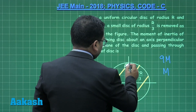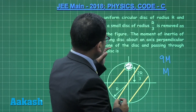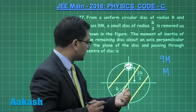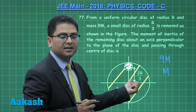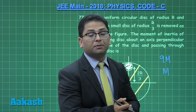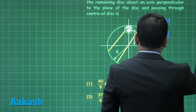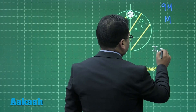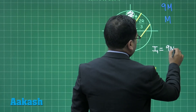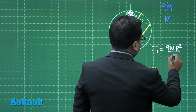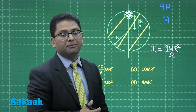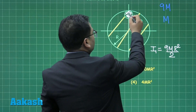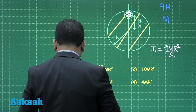We need to find the moment of inertia of the remaining disc about an axis perpendicular to the plane and passing through the center. Using superposition: I1 is the moment of inertia of the complete disc, which equals 9mR² / 2.